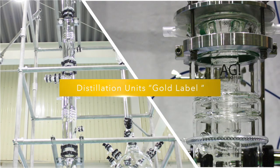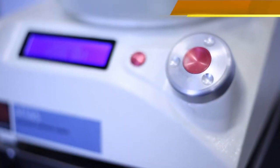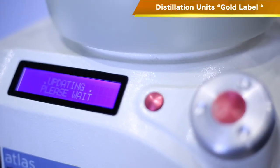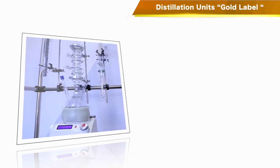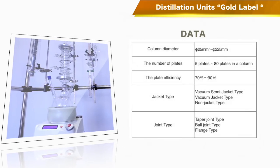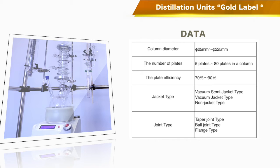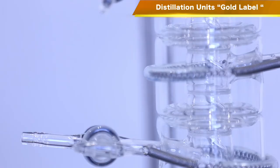AGI Gold Label Distillation Units with Aldershaw Column. The essential part of this distillation unit is the Aldershaw Column. This unit is ideal for corrosive testing because it is fully made of glass. And, thanks to the Glass Plate Column, maximized gas-liquid contact is possible.